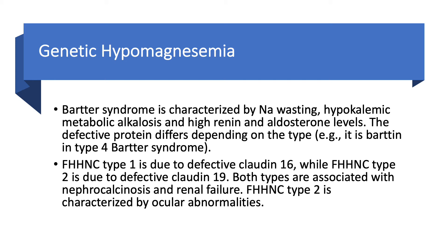With familial hypomagnesemia with hypercalciuria and nephrocalcinosis, it is either due to defective claudin-16 or claudin-19. In the thick ascending limb, claudin-16 and claudin-19 form a tight junction protein complex through which magnesium and calcium pass. The defect can be in claudin-16, causing type 1, or claudin-19, causing type 2. The problem is with the paracellular reabsorption of magnesium in the thick ascending limb.